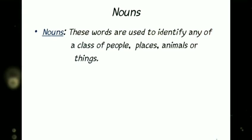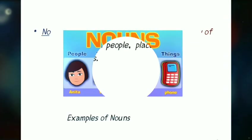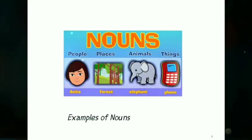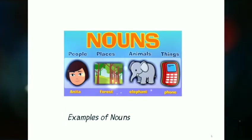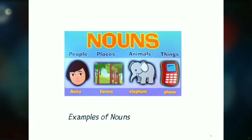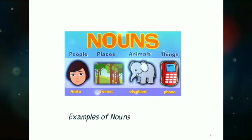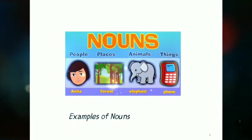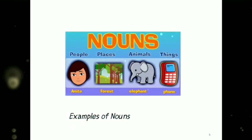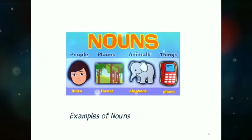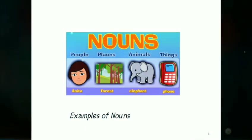Examples of nouns: names of people - Anita, Raju, Ram, Sita; names of places - forest, zoo, school, playground; names of animals - elephant, dog, fox, tiger; names of things - mobile, telephone, table, chair.